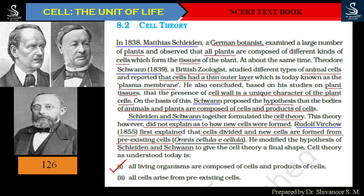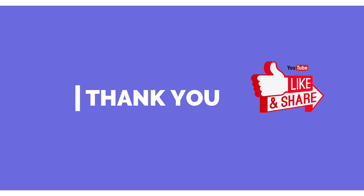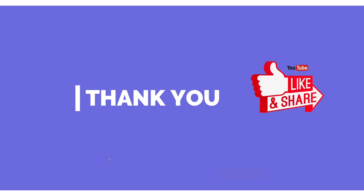The proposed modern cell theory states: all living organisms are composed of cells and the products of cells — a statement given by Schleiden and Schwann — and all cells arise from pre-existing cells, added by Rudolf Virchow. Thank you, students. I hope you all understood the cell theory. Please comment on the video and share it with your friends. Thank you.